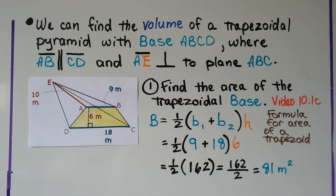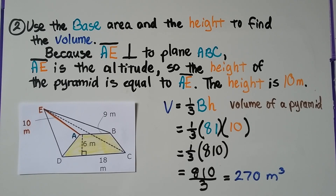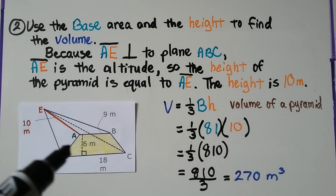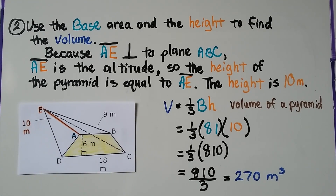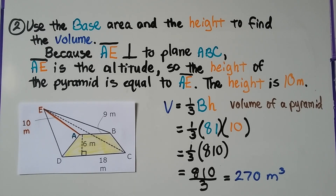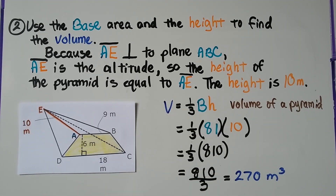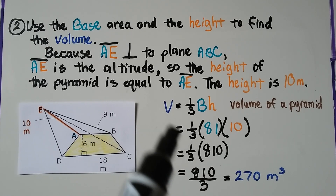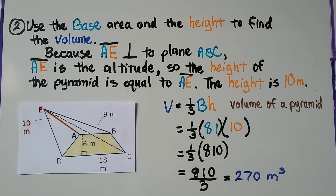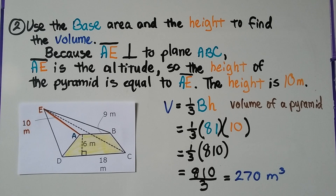Now we use the base area and the height to find the volume. Because AE is perpendicular to plane ABC, segment AE is the altitude, so the height of the pyramid equals segment AE, which is 10 meters. For the volume of a pyramid, V equals one-third BH. With a base of 81 meters squared and a height of 10, we get one-third times 810, or dividing by three, 270 meters cubed.